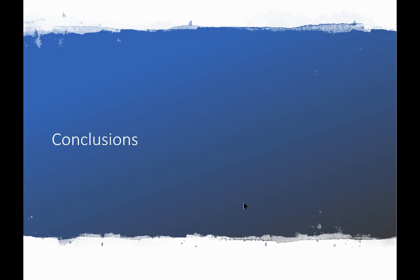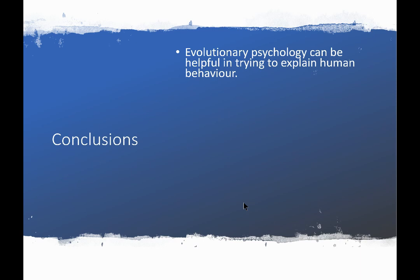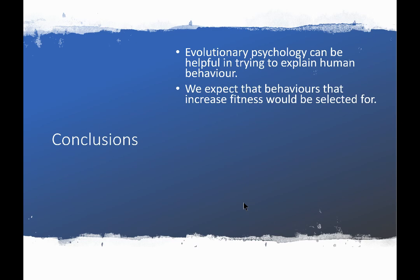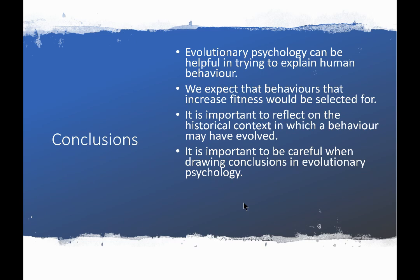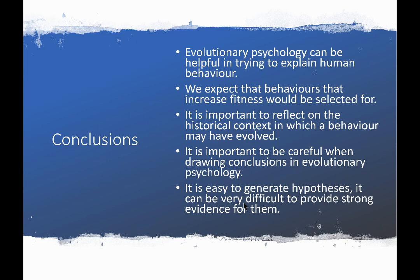Evolutionary psychology can be helpful in trying to explain human behaviors — we expect that behaviors that increase fitness would be selected for. It is important to reflect on the historical context in which a behavior may have evolved, rather than a modern context. It is also important to be careful when drawing conclusions. We don't have a particularly wonderful understanding of our own evolutionary history, and the complexity of human behavior can quite easily lead us to the wrong conclusions. It is very easy to generate hypotheses, but it can be very difficult to provide strong evidence for them. Hence the need for caution.